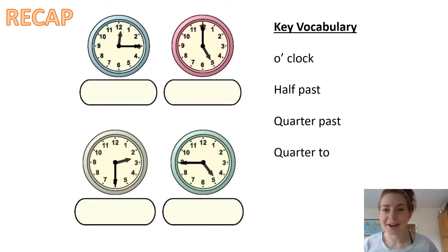Okay, so we're going to get started with recapping our knowledge. On the screen you can see four clocks and in the key vocabulary four key phrases for telling the time, which I know you all know. So we have o'clock, half past, quarter past, and quarter to. Now what I want you to do is pause me right now and match up the key phrases with the clocks on screen.